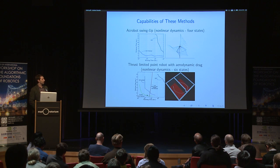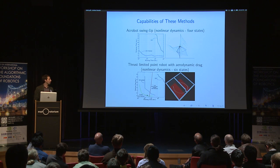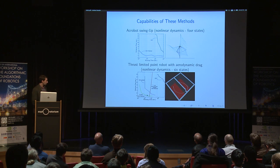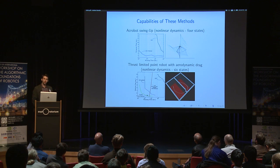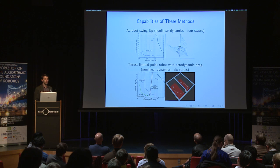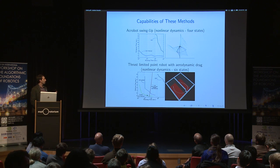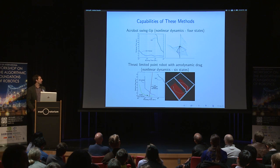To illustrate the kinds of problems we can address with these techniques, I did a couple of benchmarks. Here I'm showing an Acrobot swing-up problem — a nonlinear underactuated system with four states. The second example is a thrust-limited point robot with aerodynamic drag, another nonlinear system with six states. In these plots, the vertical axis is the cost of solutions returned by each algorithm and the horizontal axis is the running time. The practical benefit of this new approach is a considerable reduction in running time by between two and three orders of magnitude in the examples I've experimented with.